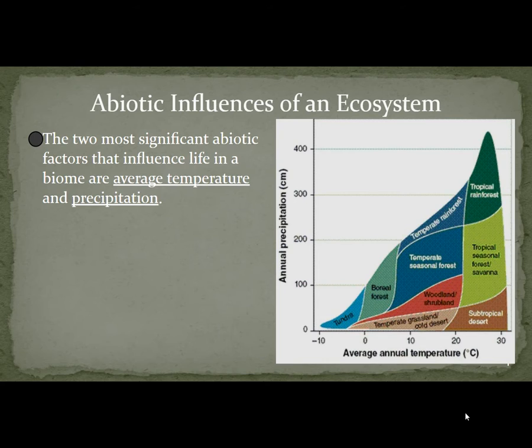Abiotic influences on an ecosystem: the two most significant abiotic factors that influence life in a biome are average temperature and precipitation.